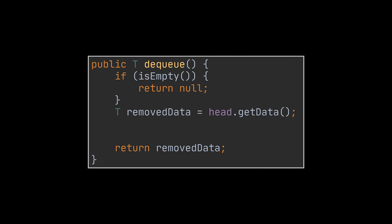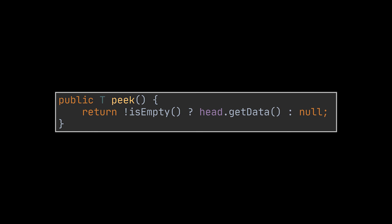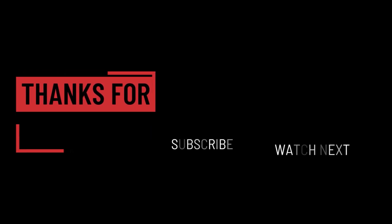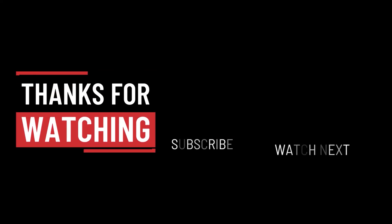For the dequeue operation, we check if the queue is empty and return null if so. Otherwise, we save the head element in a variable, then set the head to be the next node of the current head — similar to incrementing the head index in the array version. We then decrement the size. Finally, for the peek operation, we must first check that the queue is not empty, because calling head.getData() on a null head would throw a NullPointerException. That's it for this video — hope it was helpful, see you on the next one.